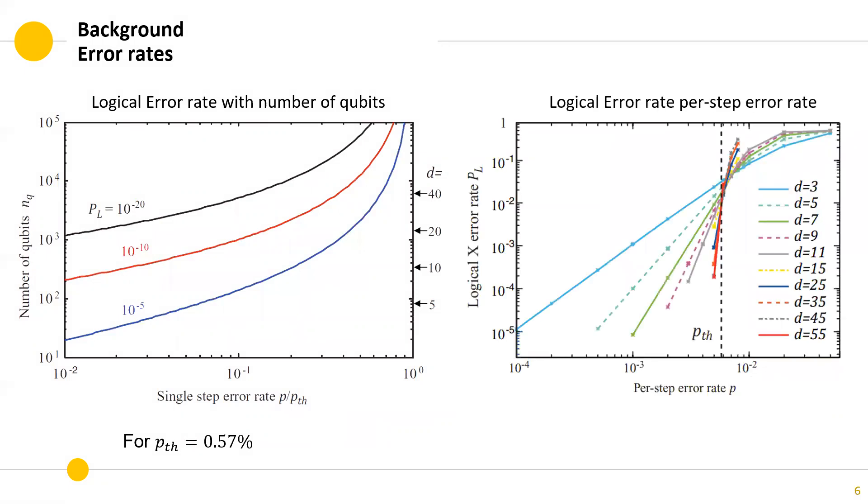The second graph shows the result from simulating the surface code with different number of qubits. It shows the dependency of the logical error rate on the physical error rate, where increasing the number of qubits improves the tolerance to logical errors.